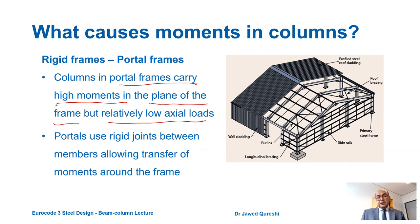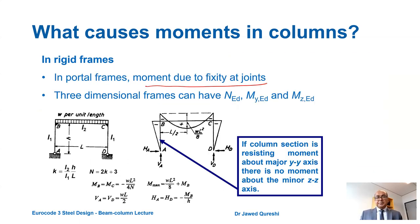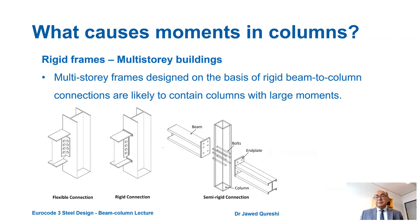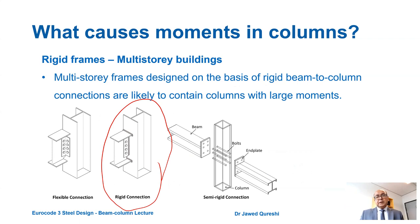Joints in portal frames are rigid, which means they transfer moment from the beams to the column. In rigid frames such as portal frames, moment occurs due to fixity of joints, meaning moments are transferred from beams to columns. Rigid frames can also occur in multi-storey buildings, though it is not very common; in those cases a column can be designed as a beam column.